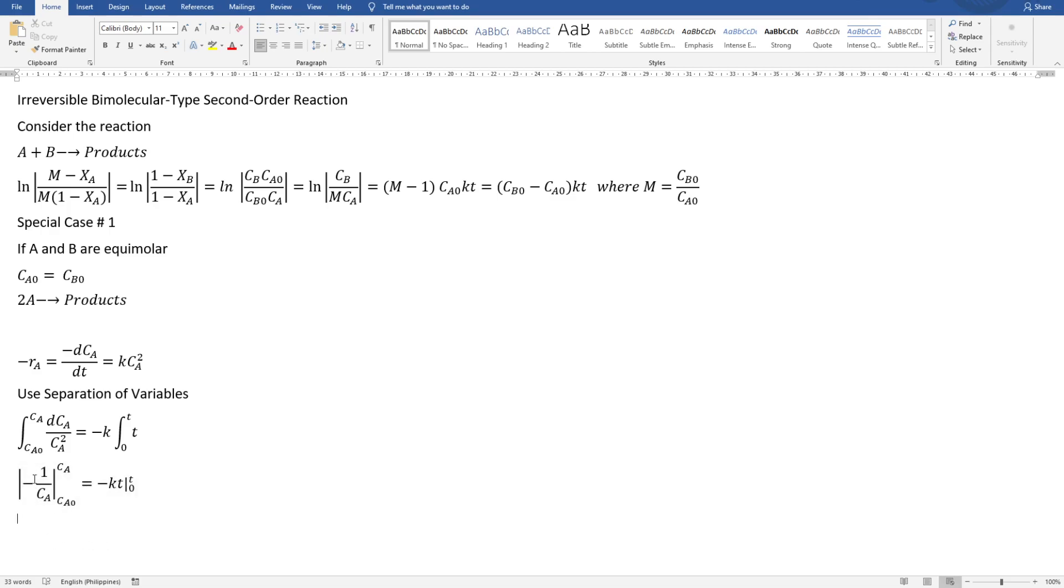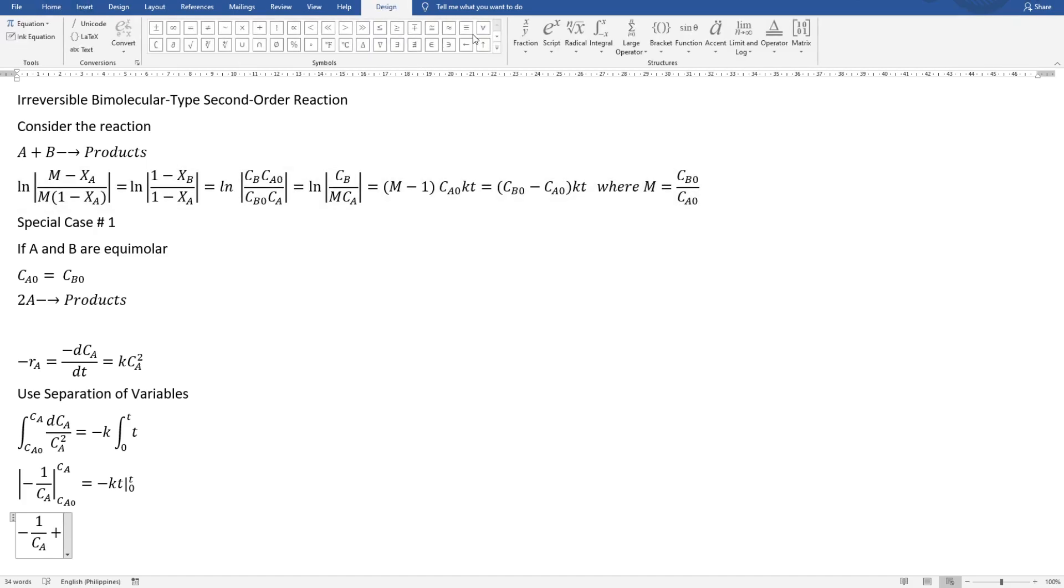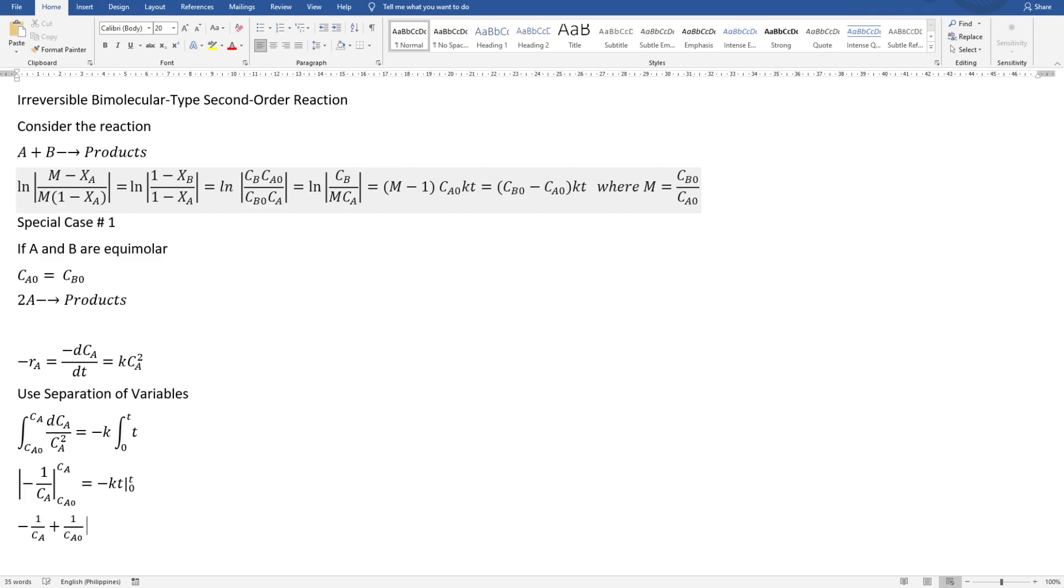applying the limits or evaluating the limits we get upper limit minus minus, or positive one over CAO equals negative negative kt, right?